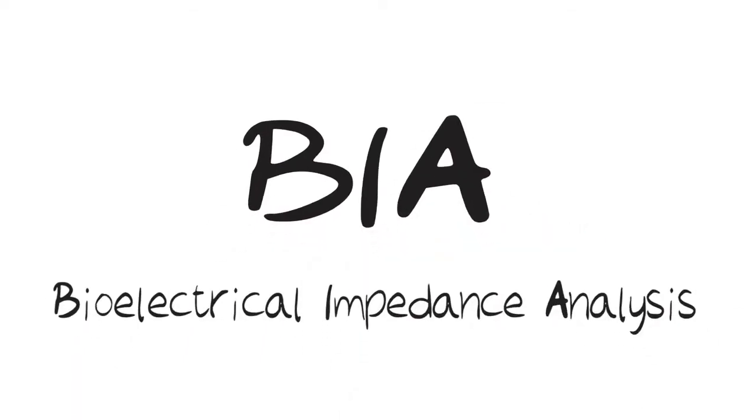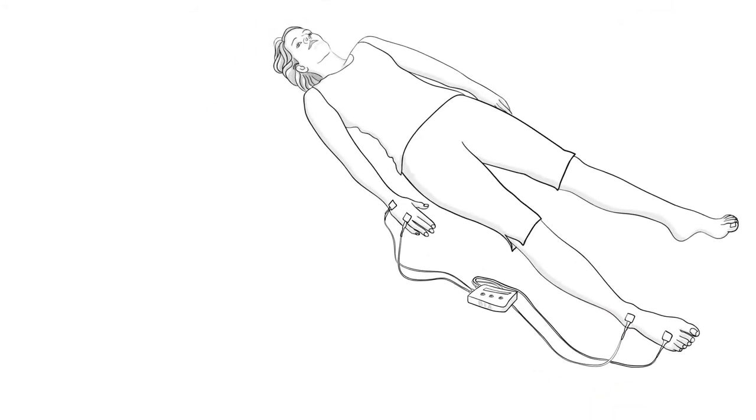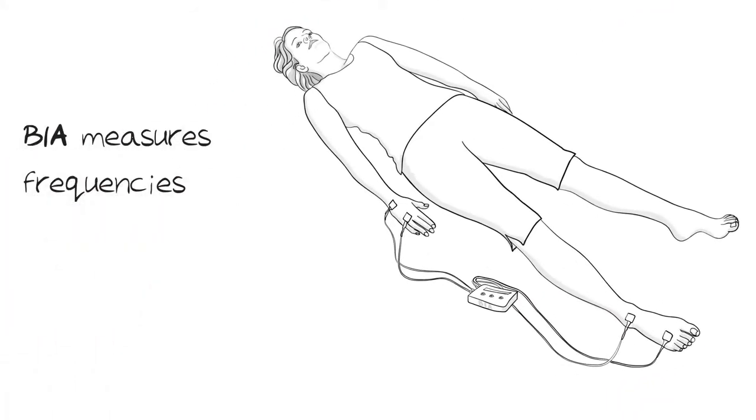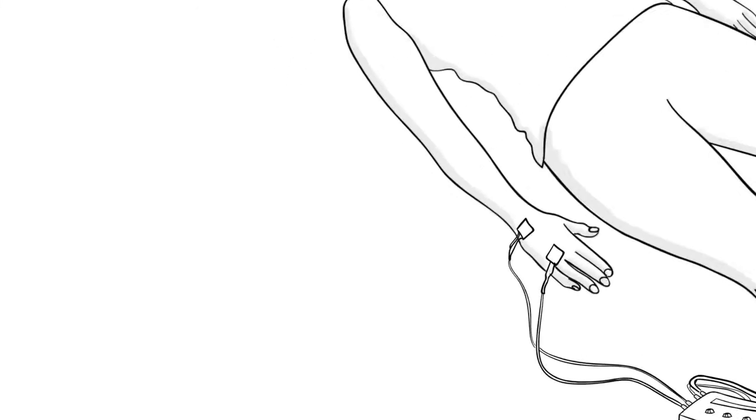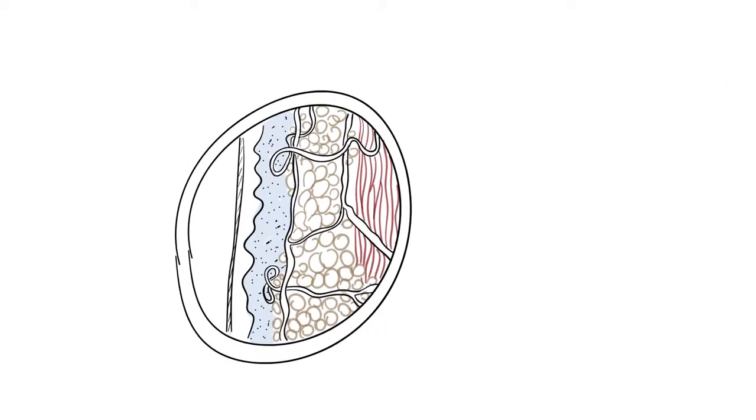BIA, or Bioelectrical Impedance Analysis, involves electrodes attached to the hands and feet, and a BIA device measures at a range of frequencies to receive impedance values, which can be used to calculate the amount of body fat, lean muscle mass, and water in the body.